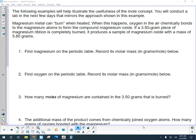When this happens, oxygen in the air chemically bonds to the magnesium atoms to form the compound magnesium oxide. If a 3.50 gram piece of magnesium ribbon is completely burned, it will produce a sample of magnesium oxide with a mass of 5.80 grams.